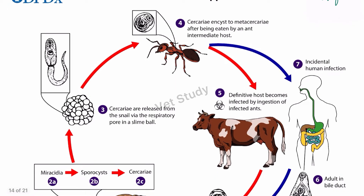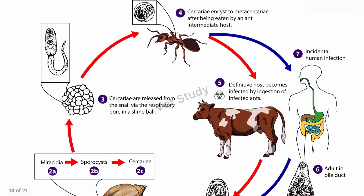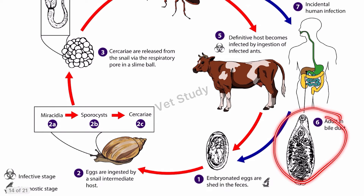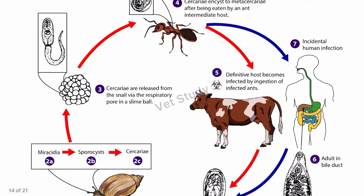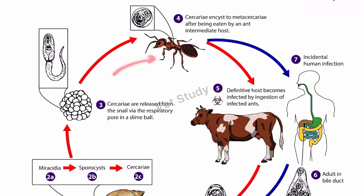This ant can be ingested incidentally by the human or the definitive host, becoming infected through ingestion of the ant. The metacercaria is the infective stage. Once ingested, the parasite excysts in the duodenum and reaches the liver via the common bile duct. Adults form in the bile duct and start producing eggs. The important thing to remember is the slime ball formation — this question is frequently asked. The slime ball forms in Dicrocoeliium dendriticum; it is many cercaria clumped together, and when eaten by the ant, it becomes metacercaria.